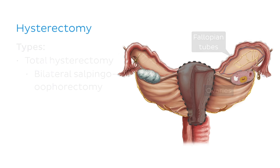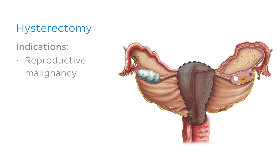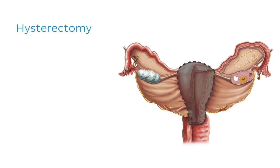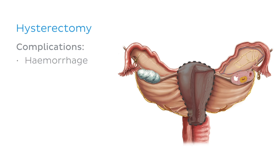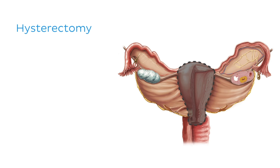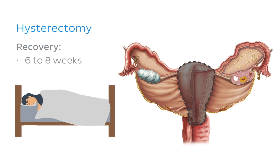This surgery is a very common procedure and has various indications, including reproductive malignancy, uterine prolapse, endometriosis, and major postpartum haemorrhage. As with any surgery, a hysterectomy comes with a risk of complications, including haemorrhage, infection, pain, and general anaesthetic complications. Depending on the type of procedure, it can take six to eight weeks to fully recover from a hysterectomy.